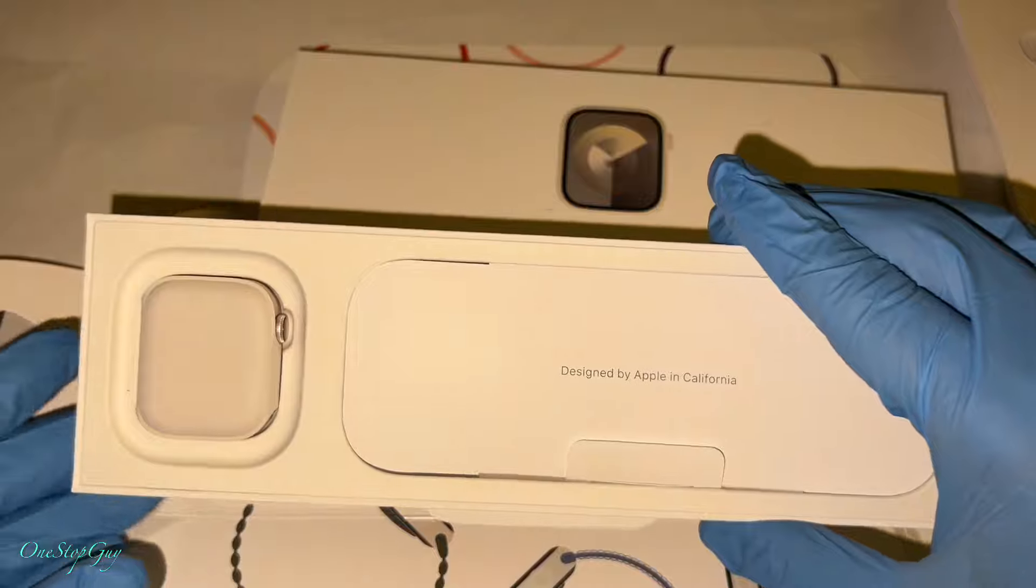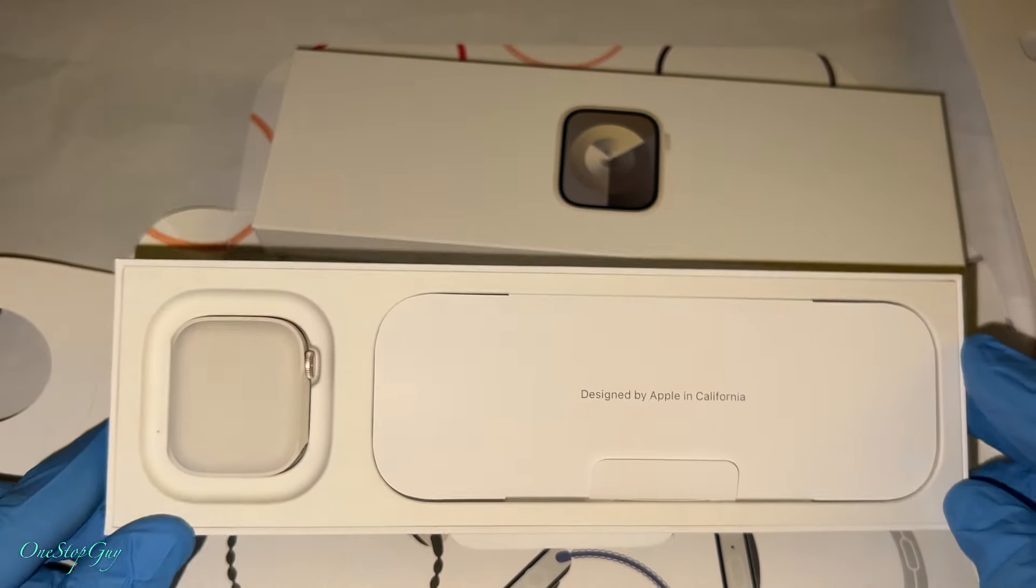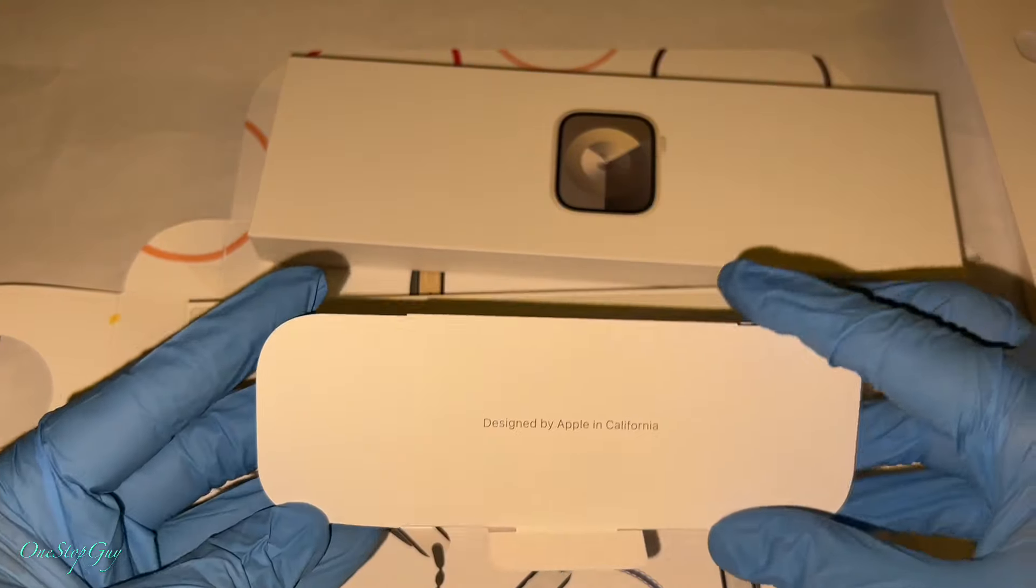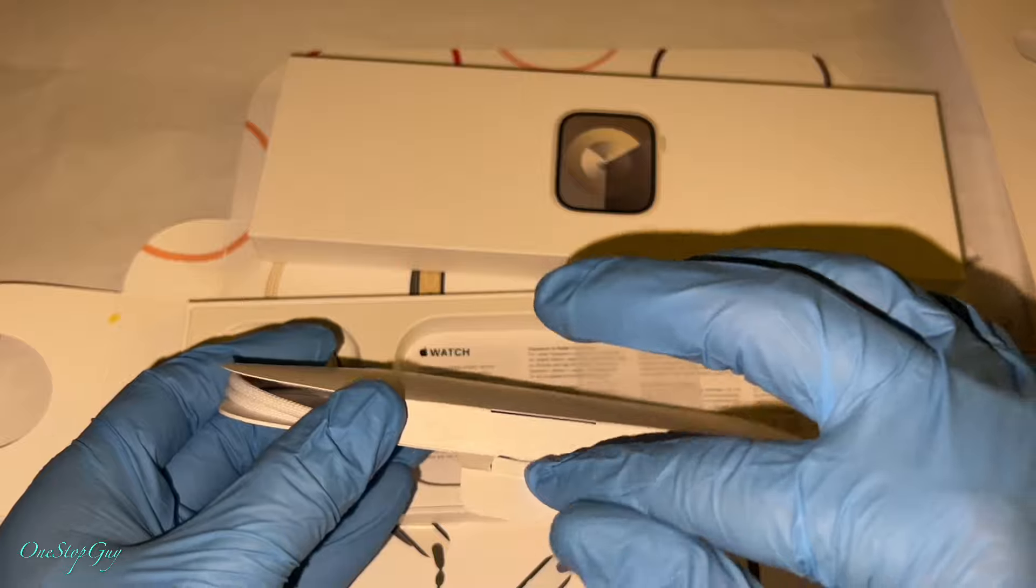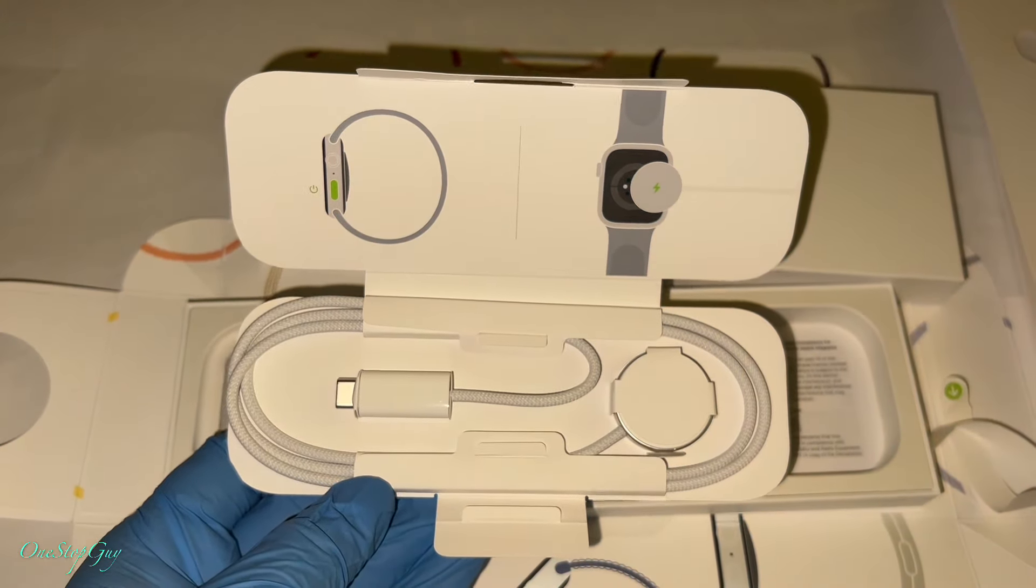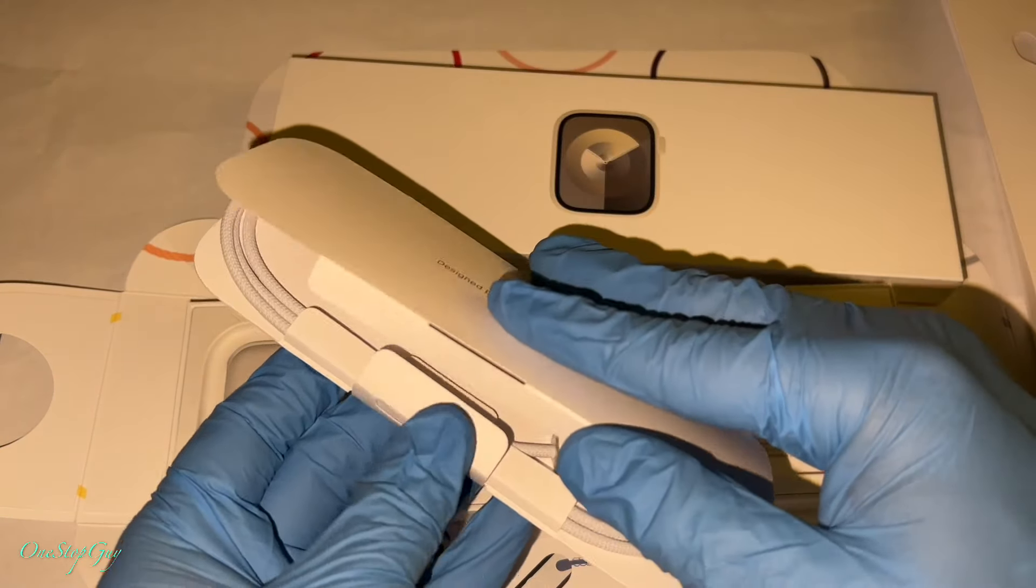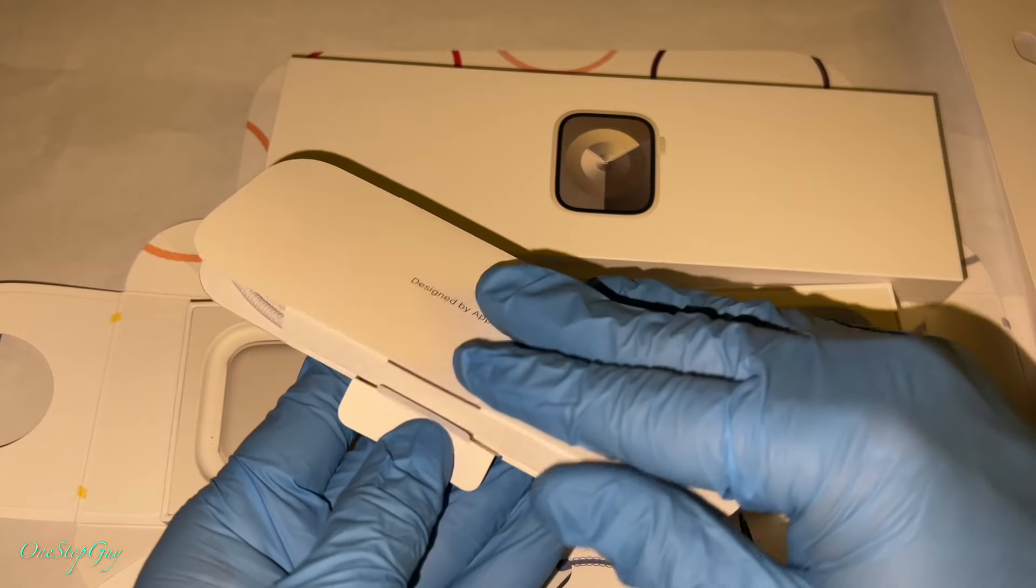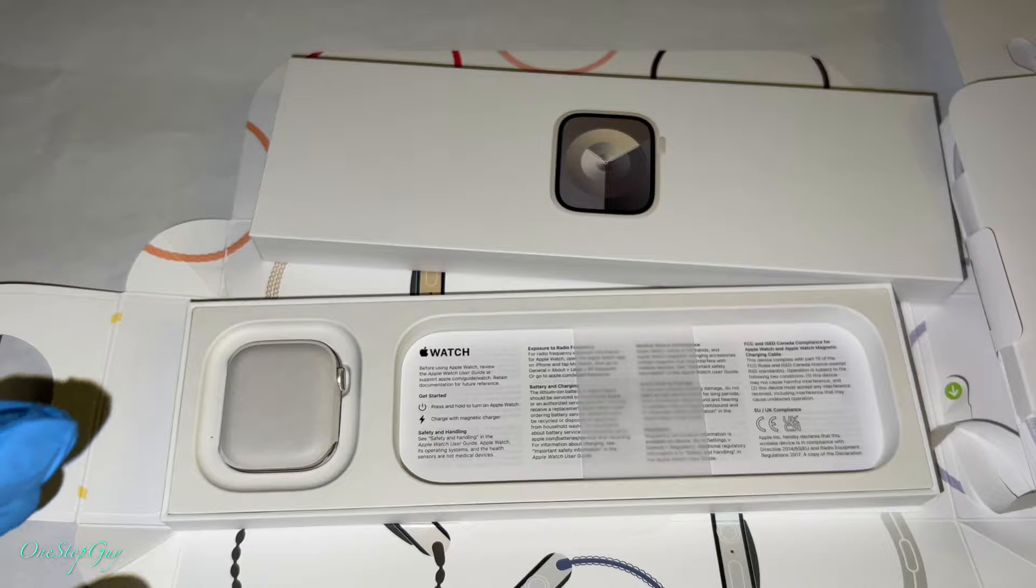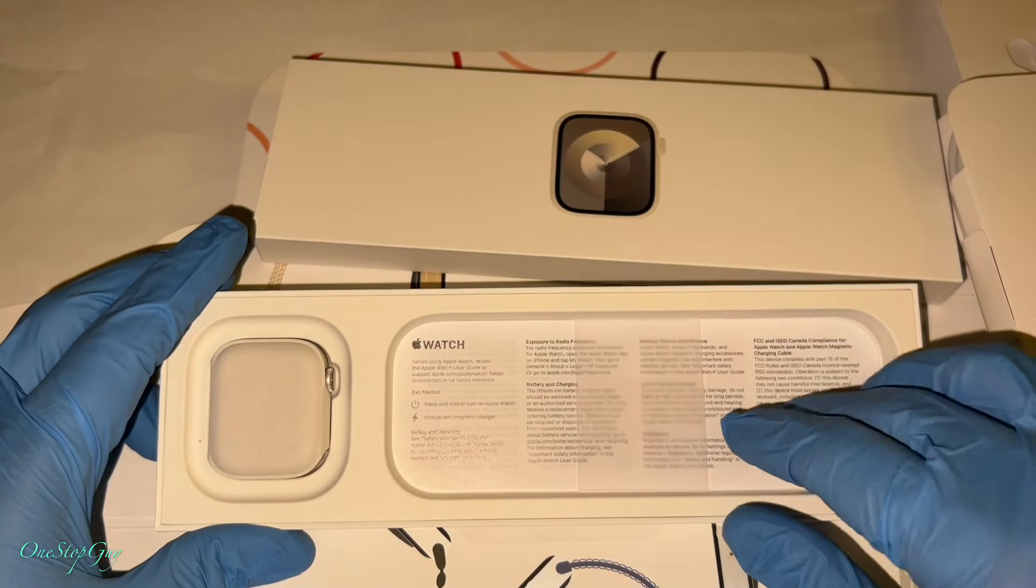Just gotta pull it out, same goes with this side. Once you open it up it's gonna look like that right there, looking really cool. Designed by Apple in California. This right here includes the charging cable, USB-C charging cable. That's obviously to charge the watch. You guys still have to buy the power adapter to plug it in to charge the watch. And it has a little bit of the manual right here.